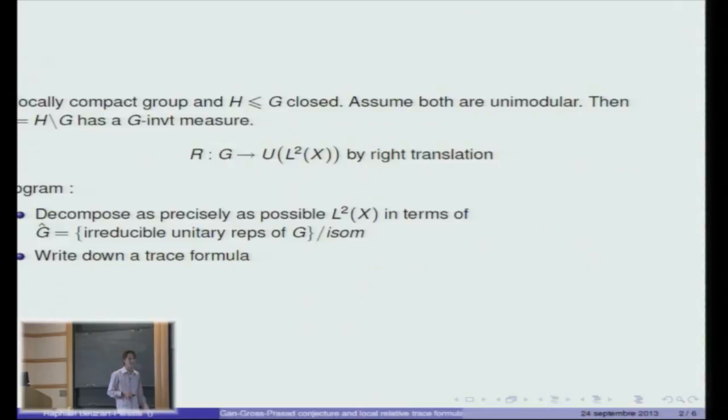Let me start with some generalities. Let G be a locally compact group and H a closed subgroup of it. I will assume that both groups are unimodular, which means that they have a measure which is left and right invariant in the translation. If we fix such measures, then by taking the quotient we get the measure on the quotient space G over H.